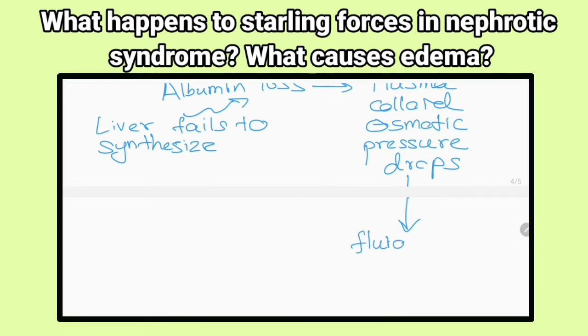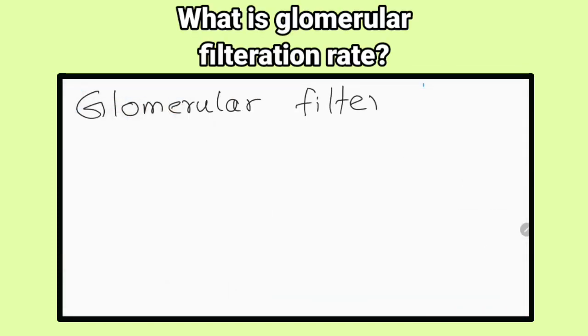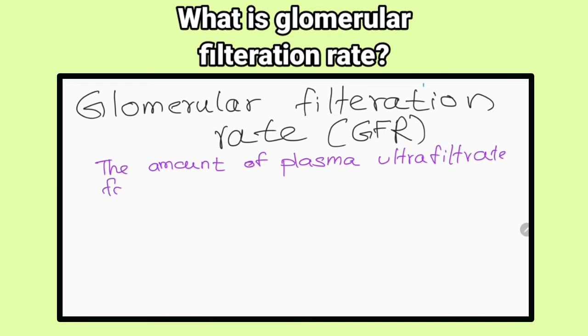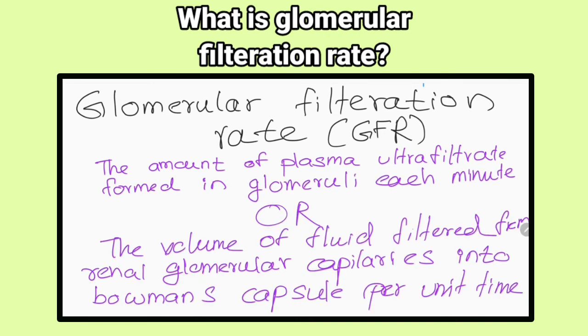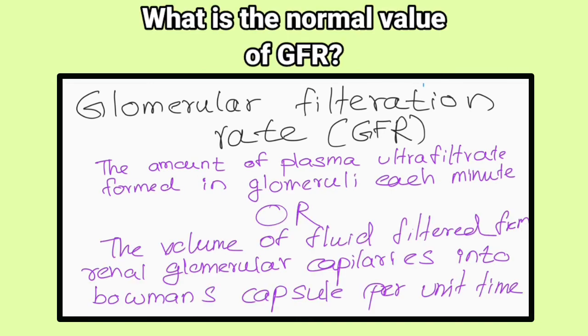Then due to unopposed capillary hydrostatic pressure, fluid will leave capillaries into interstitial fluid, resulting in edema. What is glomerular filtration rate? The amount of plasma ultrafiltrate formed in the glomeruli each minute. What is the normal value? 125 milliliters per minute.